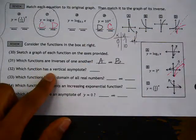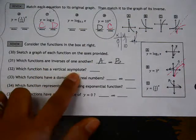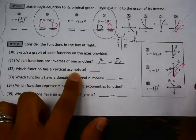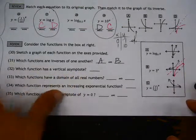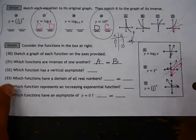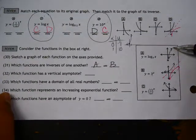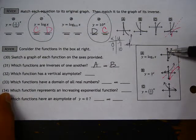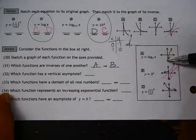Which function has a vertical asymptote? That means which graph approaches a vertical line, but never actually touches it. So, in graph a, this graph is approaching the y-axis. This is a vertical asymptote.